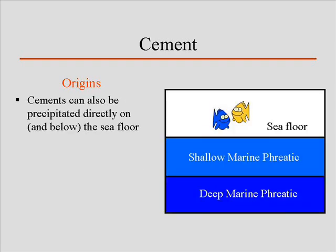The cements themselves give clues as to the origin and changes of the pore fluids — they can tell you about pH, Eh (the oxidizing potential), and geochemical variations. You can trace out pathways of pore fluids by understanding the cements. You can also get cements precipitating directly on the sea floor. If you go out to carbonate platforms currently forming today in places like Jamaica, Belize, or Australia, a lot of the sediment is cemented down to the ground because the water is so saturated in calcium carbonate — cements can take place on the sea floor both in deep and shallow settings.